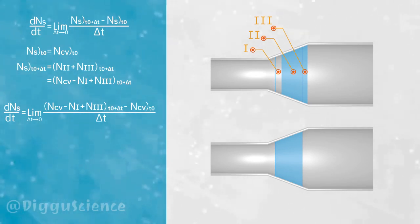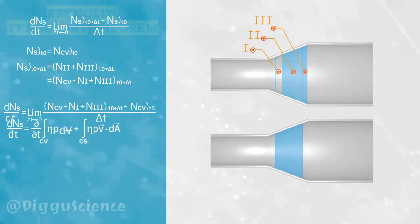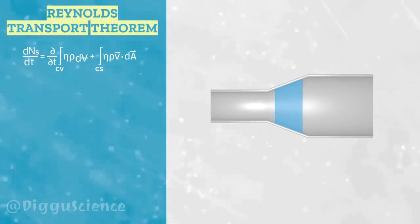Using calculus analysis we will get dN/dt in the system is equal to the partial derivative with respect to t of the integral eta rho with respect to the control volume plus the integral with respect to the control surface of eta rho vector v dot vector dA. This is the mathematical statement of Reynolds Transport Theorem.